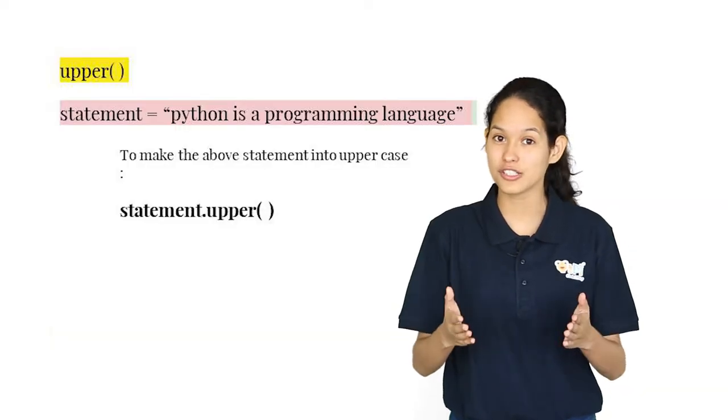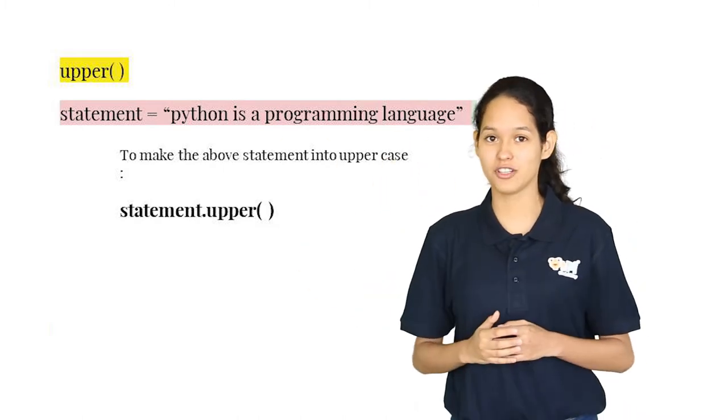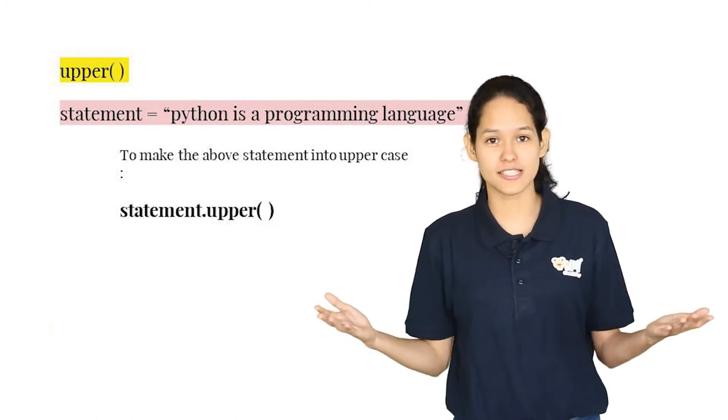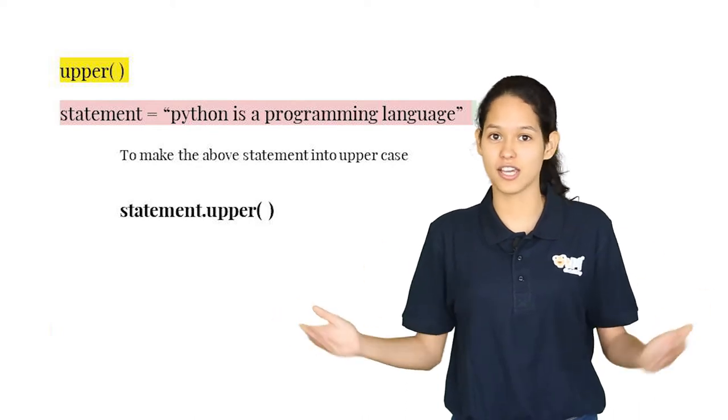The string function you need to use is upper. As you can see, the string is assigned to a variable and the variable name dot upper followed by parenthesis is the command you can use to convert the entire string into capital letters.